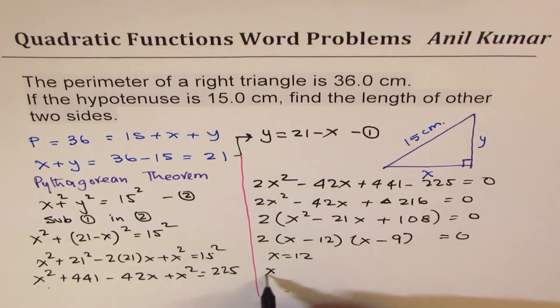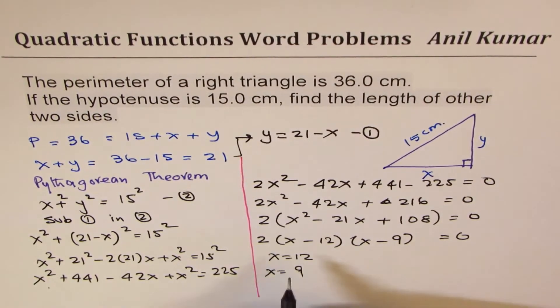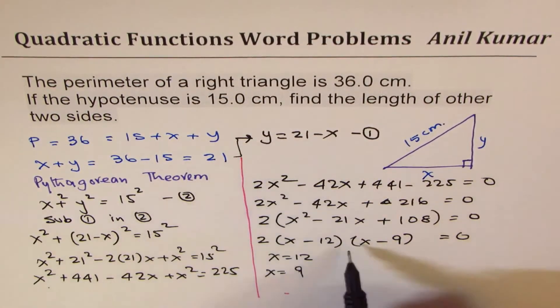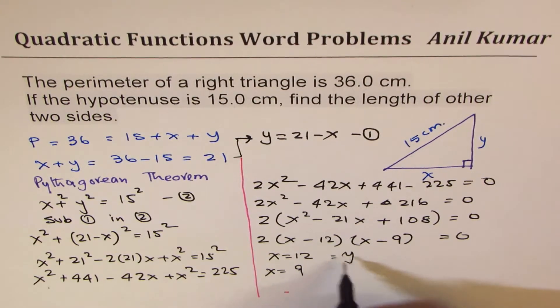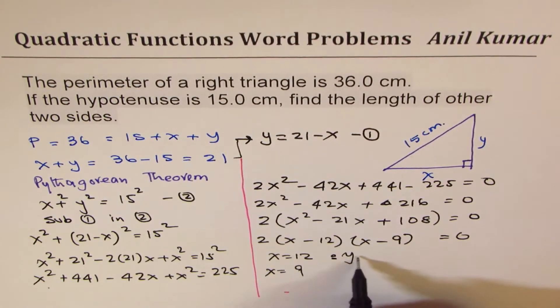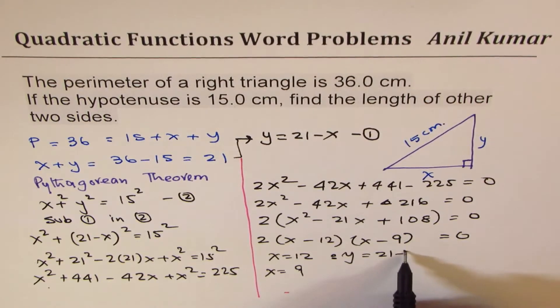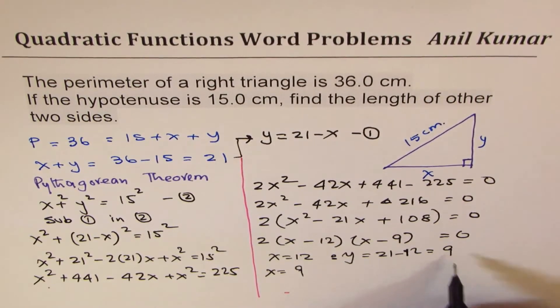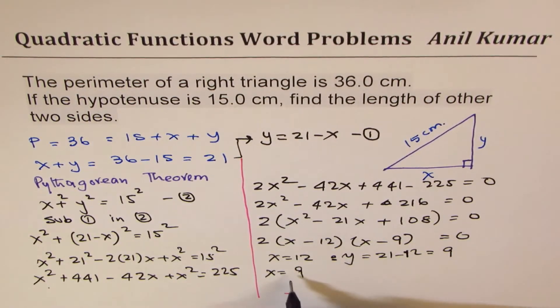Now if X is 12, what is Y? Y is equal to 21 minus 12 which is 9. So anyway for 9 you'll get 12.